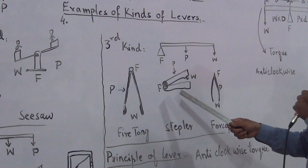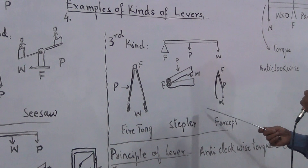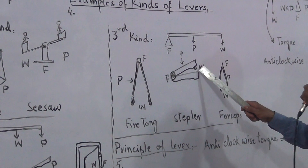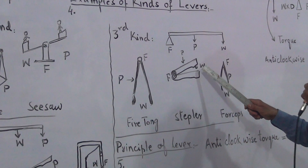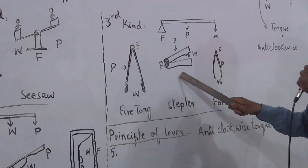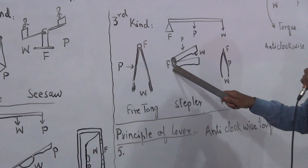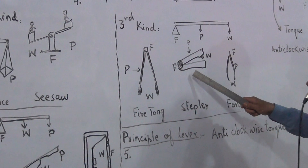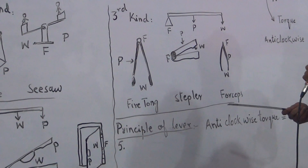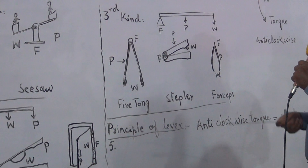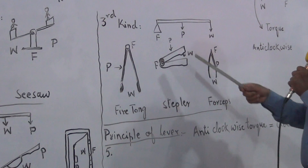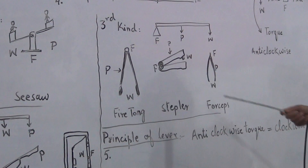This is a stapler machine. Here you can see the paper — you send it to the center. This is a stapler. This is a human arm. The human arm is a third kind of lever.